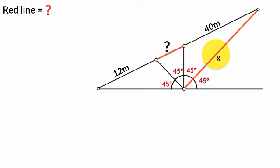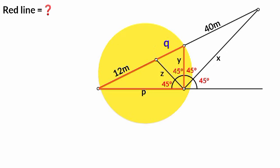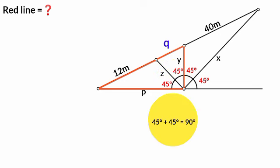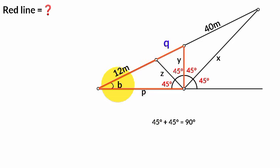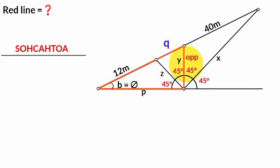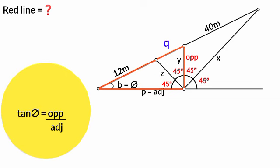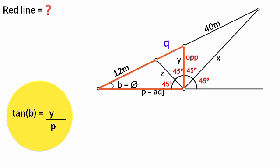Now assume the length of this side to be X, this Y, this Z and this P, while this red line will be Q. From this triangle, we can see this angle is the sum of this 45 degrees and this 45 degrees, which is 90 degrees. That is, the triangle is a right angle triangle. We assume the size of this angle to be B. Taking this angle as theta, there is an opposite and there is an adjacent. So tan(theta) equals opposite over adjacent. Theta is B, opposite is Y and adjacent is P. So tan(B) equals Y over P. We keep it aside.